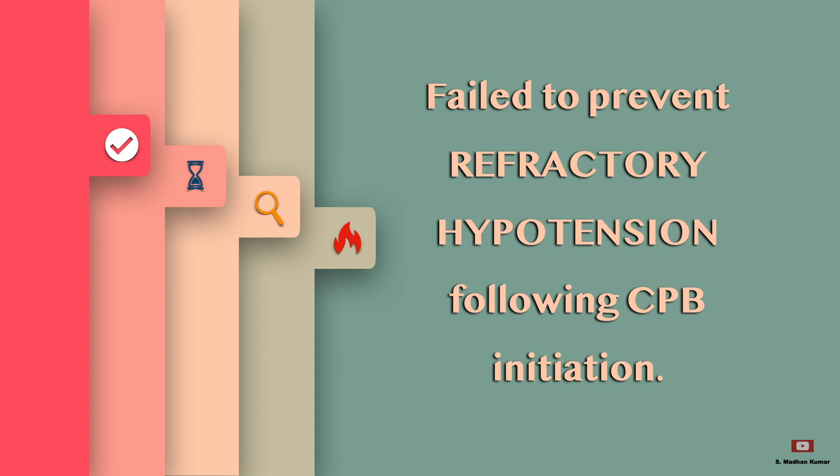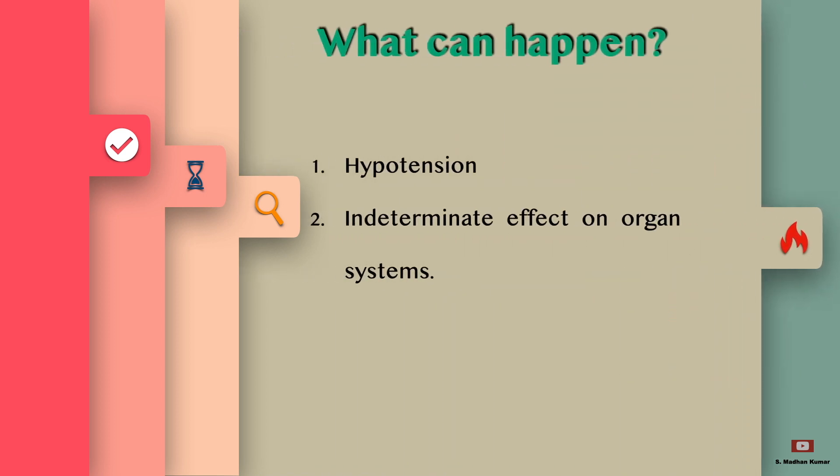After the CPP troubleshooting simplified series, today we will see fail to prevent refractory hypotension following the CPP initiation. When it occurs, it can create severe hypotension with indeterminate effects on organ systems.